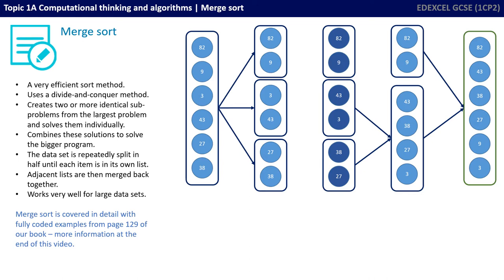The dataset is repeatedly split in half until each item is in its own list. Adjacent items are then merged back together. This algorithm works very well for large datasets.